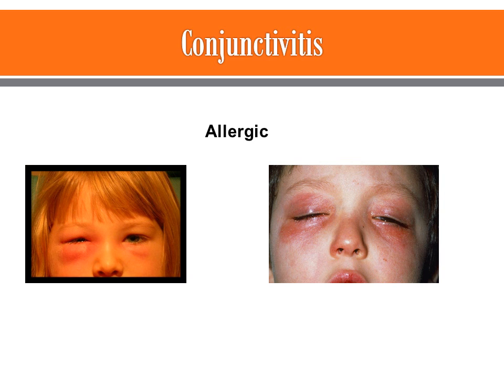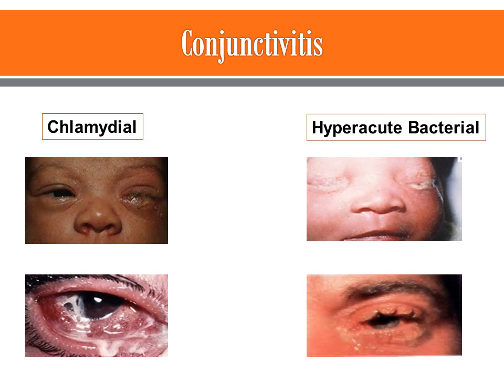In allergic conjunctivitis, you can see the marked conjunctival edema and redness — these patients are usually very uncomfortable. Two additional pictures show chlamydial and hyperacute bacterial conjunctivitis. You'll see a lot of these presentations if working with neonates, but adults can get chlamydial and hyperacute bacterial conjunctivitis as well, though it is very rare.